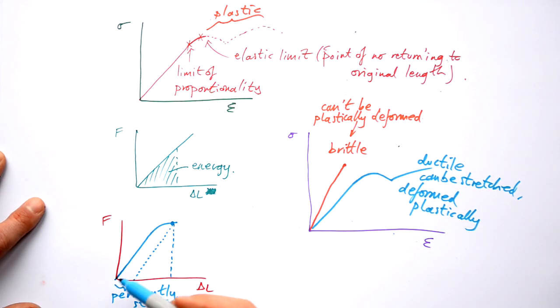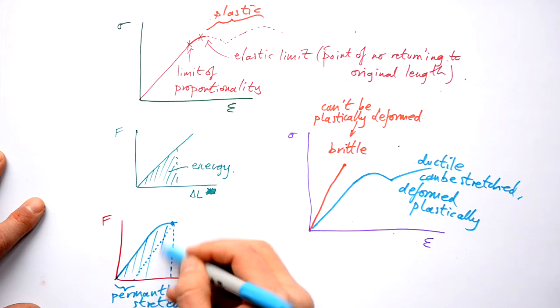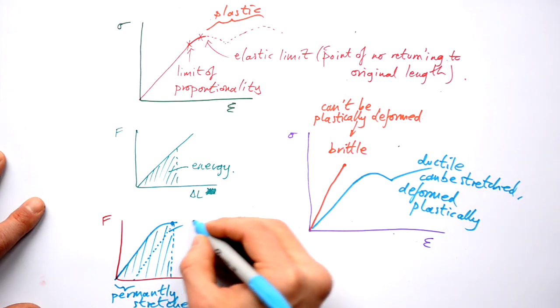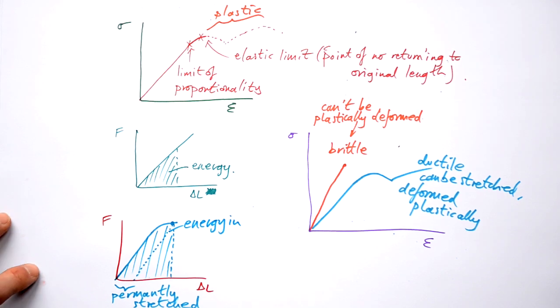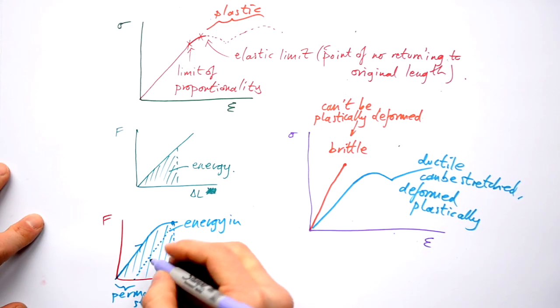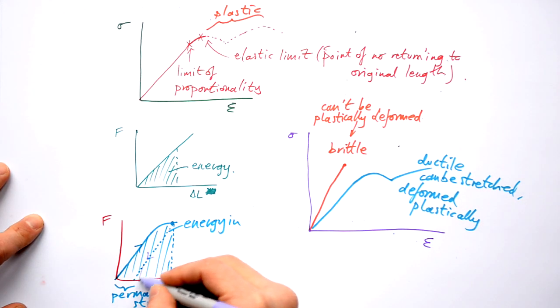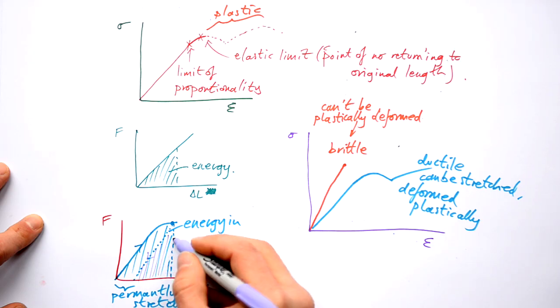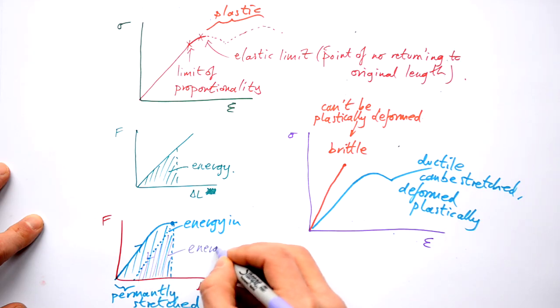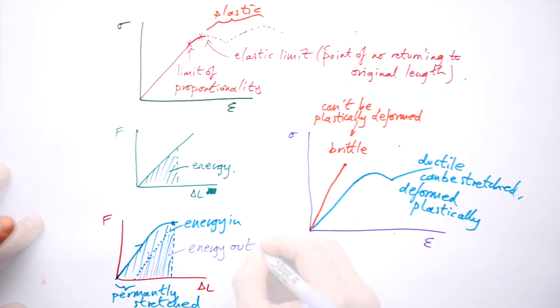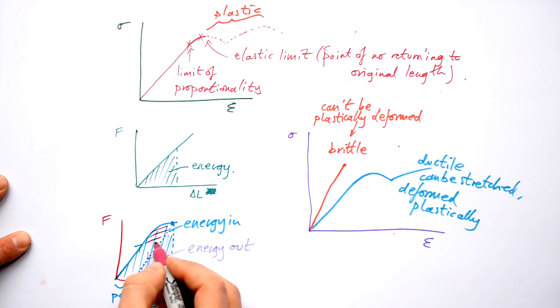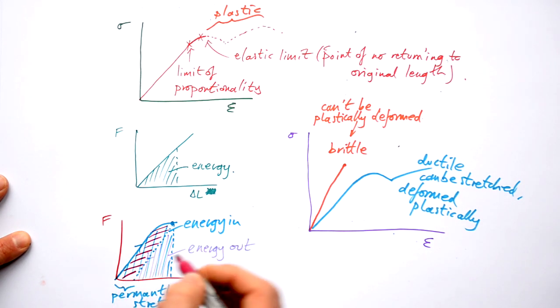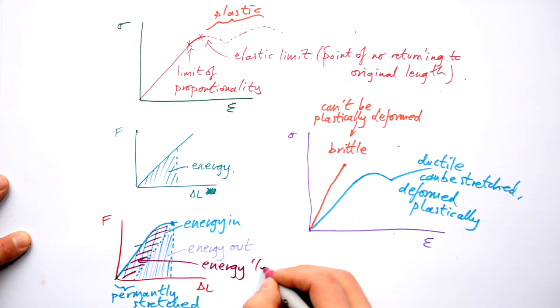Now talking about area, we know that to stretch whatever this material is up to here, the area under the graph up to the point is the energy put in when it's being loaded. When it's been unloaded however, again we know that the area under the graph gives you the energy, but this time it's the energy given out. So that must mean that whatever the area is of this here, that's going to be the energy left in the wire or the material.